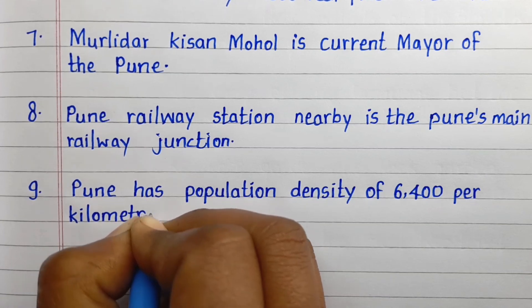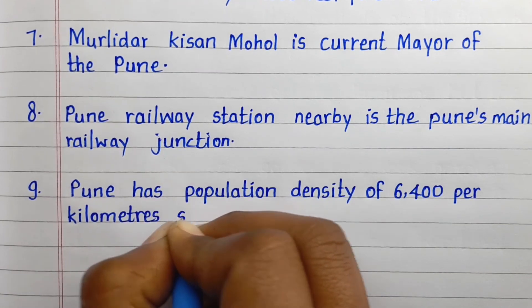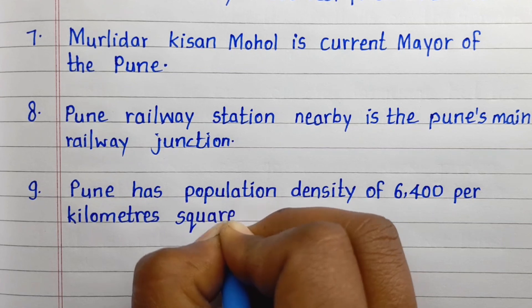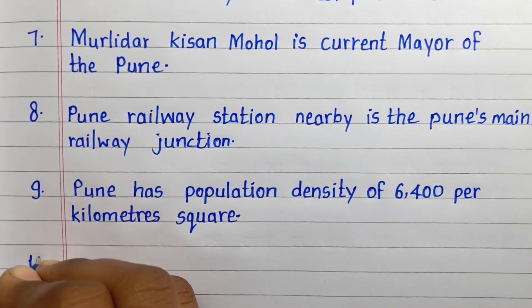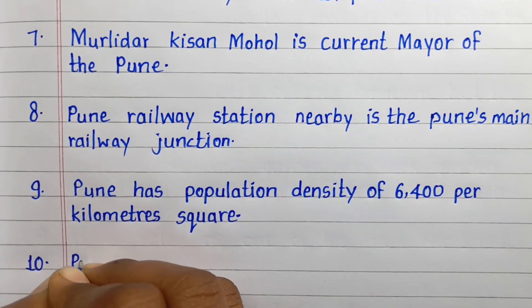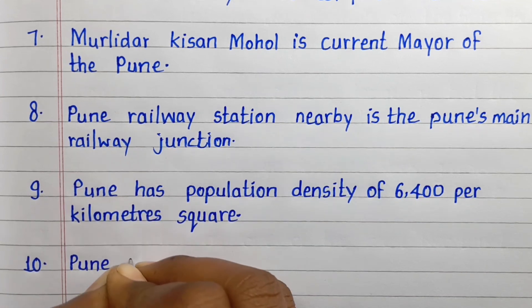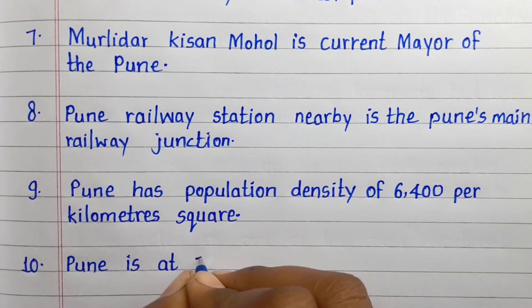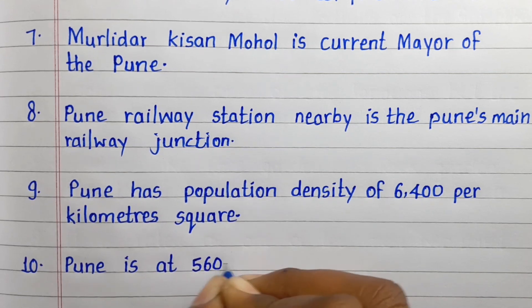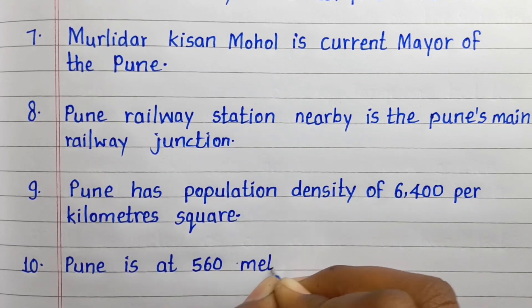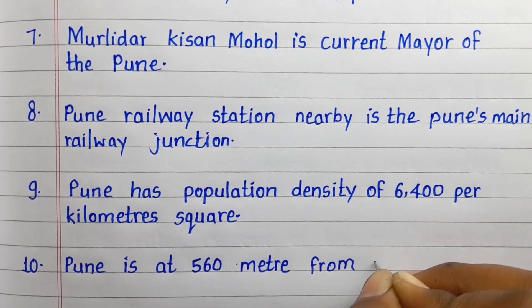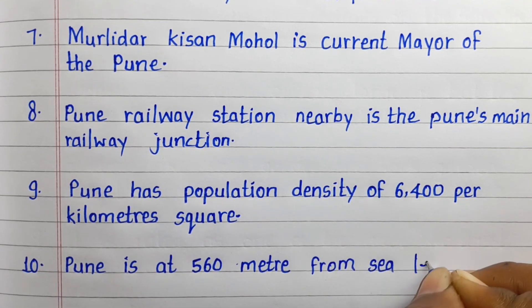Ninth line: Pune has a population density of 6,400 per km². Tenth line: Pune is at 560 meters above sea level.